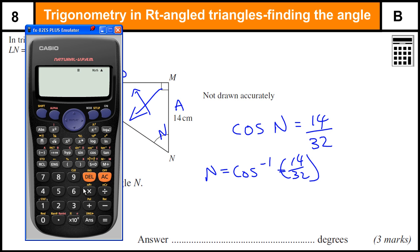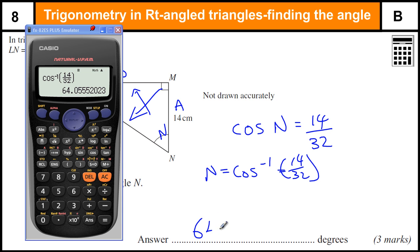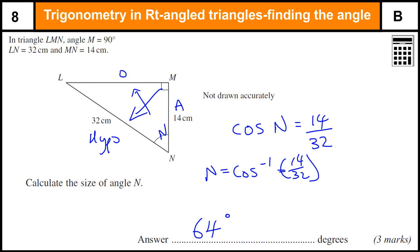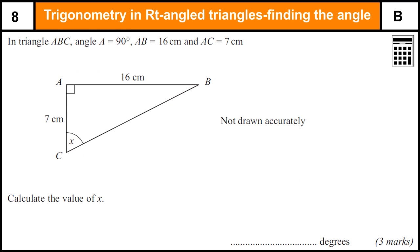The reason why these questions are worth 3 marks is because you get 1 mark for picking the right formula — so if you can just pick out the correct trigonometric ratio to use, sin, cos, or tan, then you get 1 mark. You get 1 mark for the values in, and then 1 mark for the answer. So that's going to be 64 degrees to the nearest whole degree — it could have been 64.1 but there's no need to be more accurate than that.